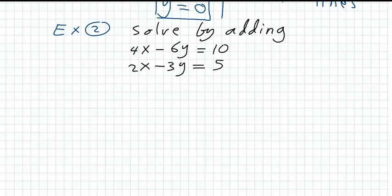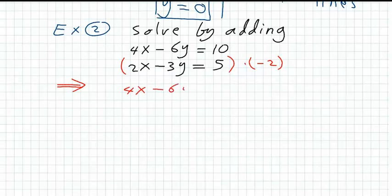Let us try to solve these two equations by deleting the x variable or y variable. If we decide to delete the x variable, we need to multiply the second equation by minus two. So we have the first equation as it is without change, and the second equation multiplied by minus two becomes minus 4x plus 6y equals minus 10.